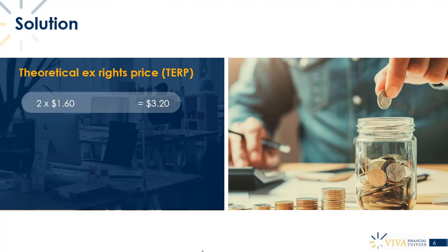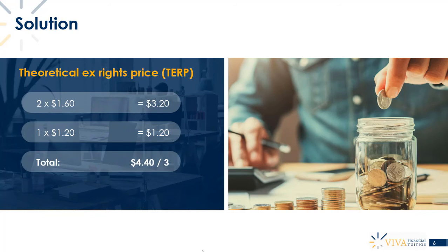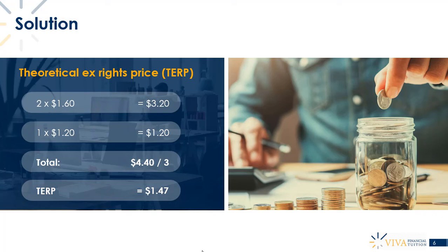For every two shares at $1.60, that's a total of $3.20. Adding one new share at $1.20 gives three shares totalling $4.40. Dividing $4.40 by three gives a TERP of $1.47 — which is, as expected, less than $1.60 and more than $1.20. So a rights issue will drag the share price down a little bit.